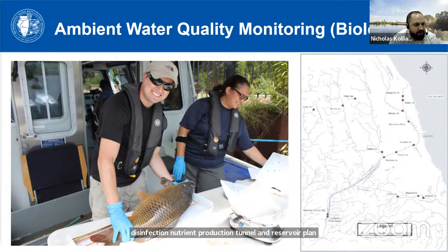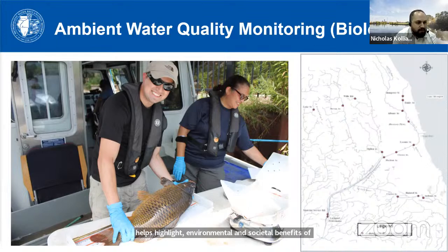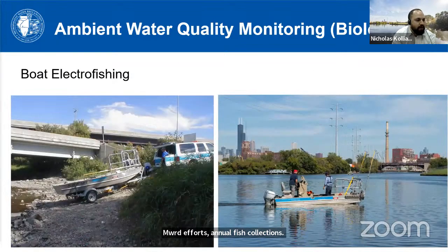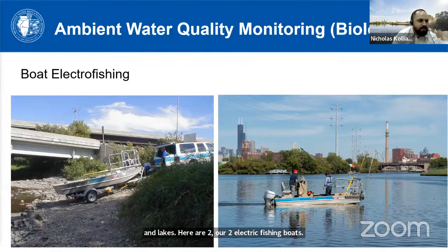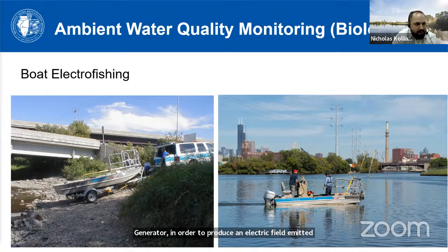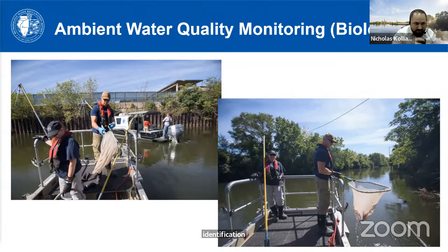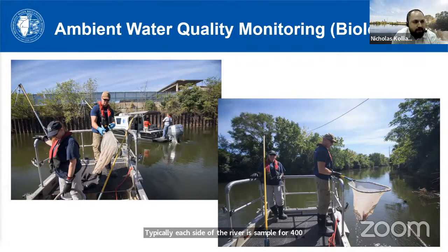Bacterial samples are collected using a special sampling can which allows collection of samples below the surface. The low-level mercury test that is conducted at the district is very sensitive, so one technician has to be designated clean hands and only touches the sample containers, while the other technician handles the sampling bucket to prevent any kind of contamination. Samples are analyzed by district personnel, and here is a list of some of the analyses that are run.